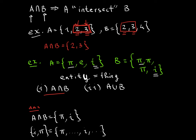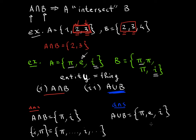Now let's do A union B. For union, as we said before, it's a set containing elements of A as well as elements of B — it connects, or unionizes, them. These two sets are almost equivalent except that set A has an E in it. So A union B = {π, E, I}. You could reverse the order — say {I, E, π} — or repeat elements however many times you want. It would still be the same set.